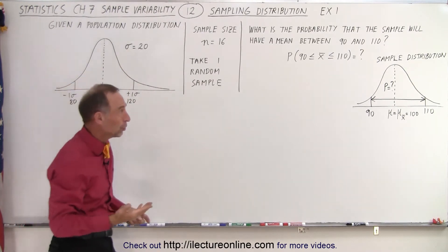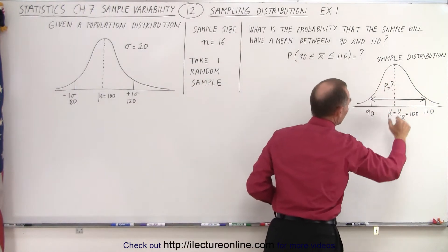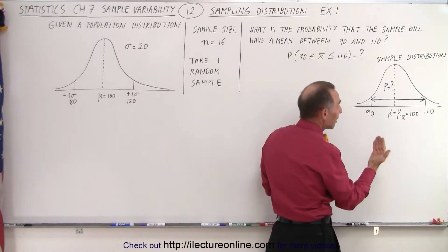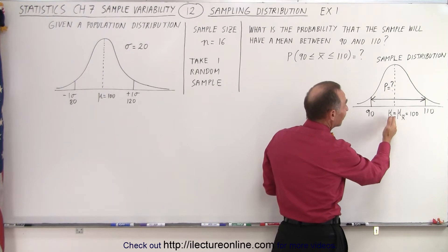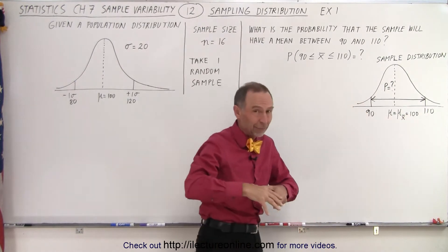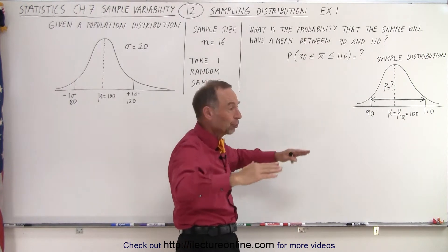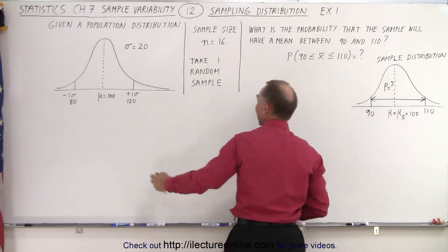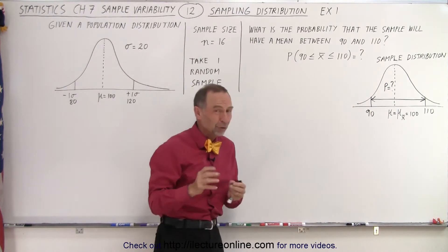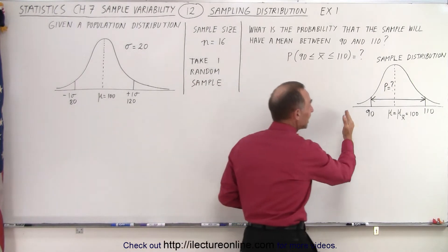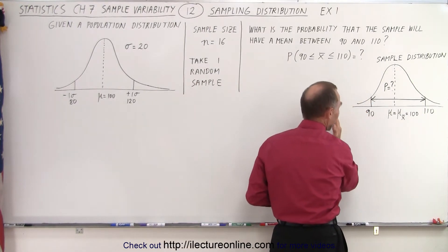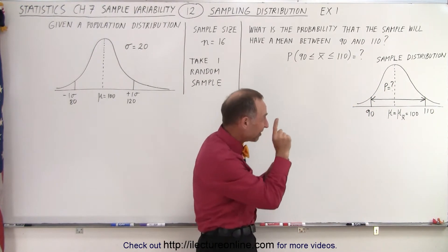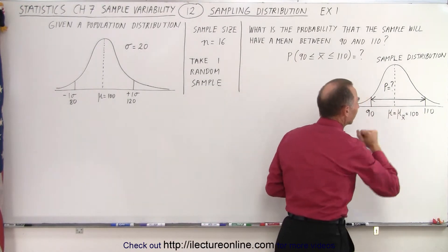What we're going to do is graph a sample distribution, which is going to be different from the population distribution. It turns out that on average the mean of the sample will be 100 — if we take a whole bunch of samples, the mean of all those samples will equal the mean of the population. But one single sample can fall anywhere, so the question is: what is the probability that the average of that one sample falls between 90 and 110?